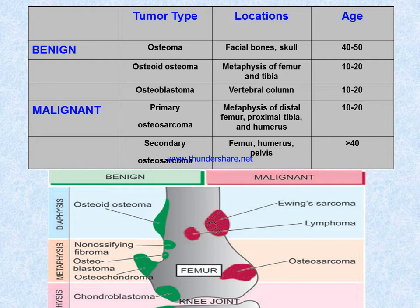These locations denote where this type of tumor is most commonly found. In the case of malignant tumors, primary osteosarcoma is mainly found in the metaphysis of the distal femur, proximal tibia, and humerus, age range 10 to 20. Secondary osteosarcoma is found in the femur, humerus, and pelvis, age range more than 40.